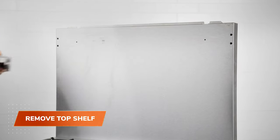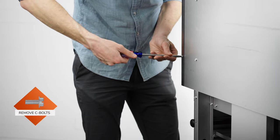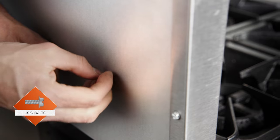Remove and discard the top shelf from the backsplash. Next, remove all the C-bolts from the backside of the backsplash and support brackets. Keep the 10 bolts to use later during assembly.